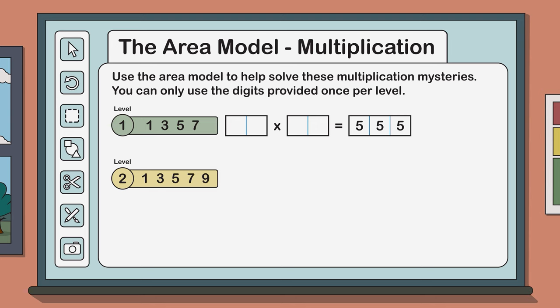Again, your task is to organize these digits into a number sentence. This time however we are looking for a two digit number multiplied by another two digit number minus a one digit number.